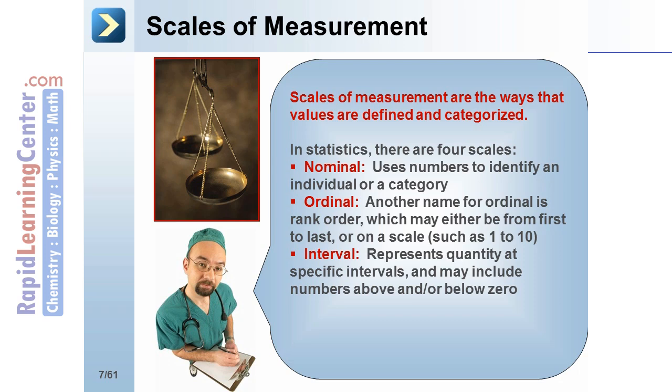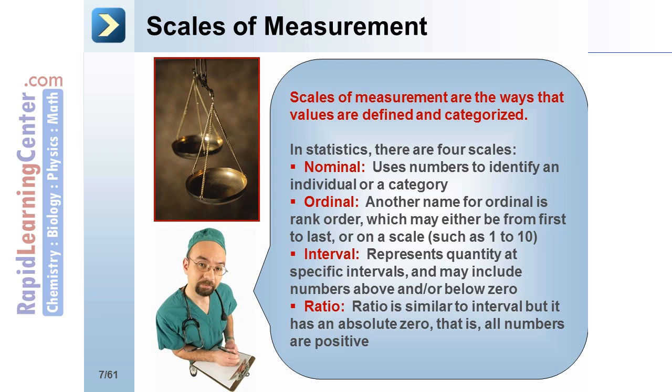For example, in a study you may code control patients as 1 and patients with a disease as 2. Ordinal, another name for ordinal is rank order, which may either be from first to last or on a scale such as 1 to 10.